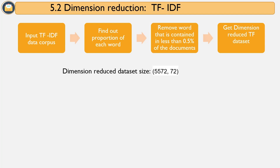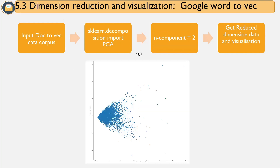For word2vec, we applied the PCA approach. The main aim of PCA is to reduce dimensions by capturing maximum variance in the data. The threshold applied is 95% variance. The graph on the screen shows that 95% maximum variance is captured with just two components.